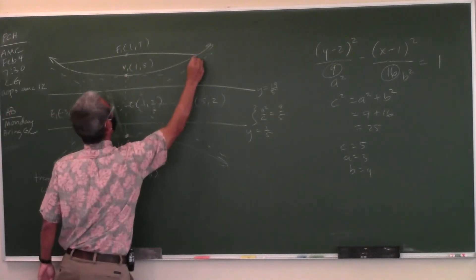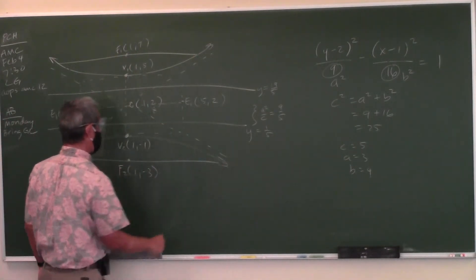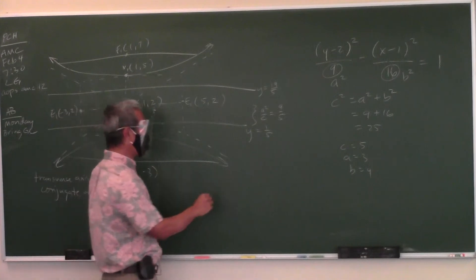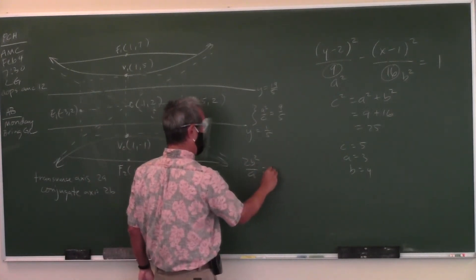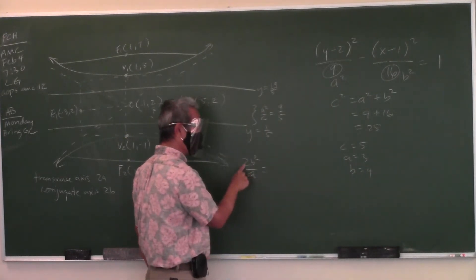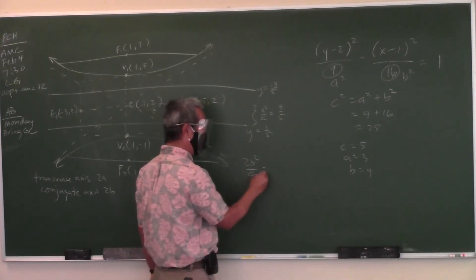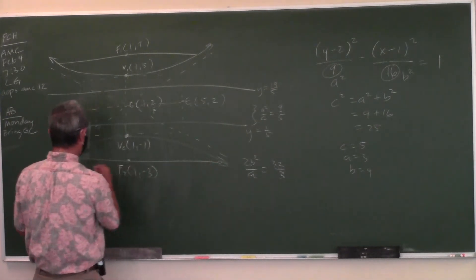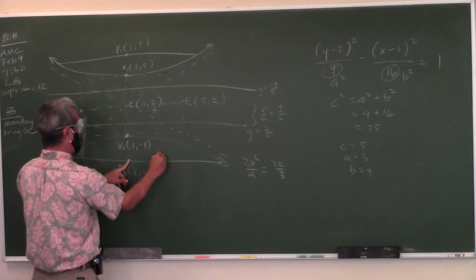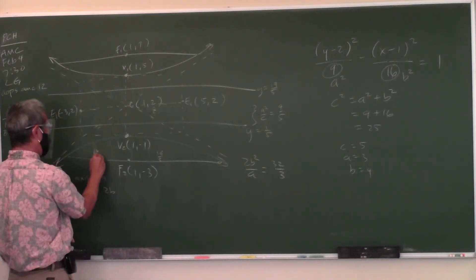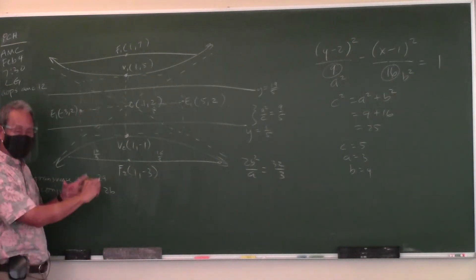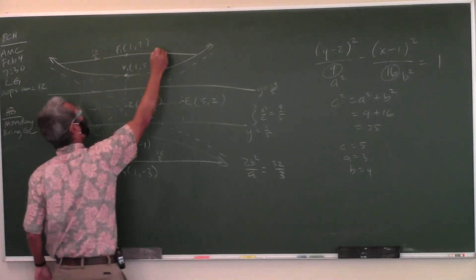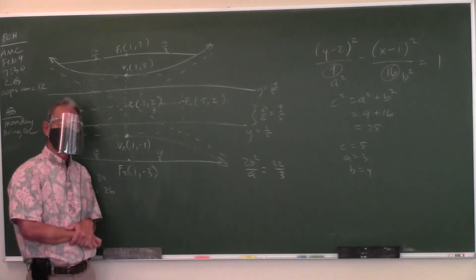There are also two latus recta — one at each focus. The length of the latus rectum is 2b²/a, same as for the ellipse. Here that's 2(16)/3 = 32/3. Half of that is 16/3, so from each focus you go 16/3 left and 16/3 right to find the endpoints of the latus rectum.